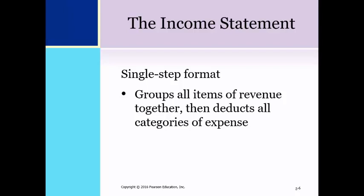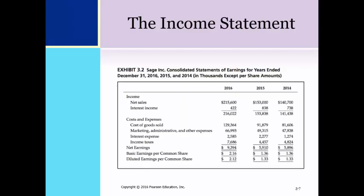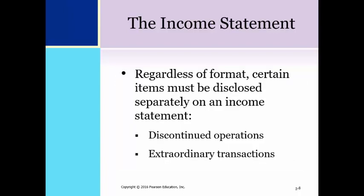The single step version of the income statement groups all items of revenue together, then deducts all categories of expense to arrive at a figure for net income. This is an illustration of a single step income statement for Sage Inc. for the years ending December 31st, 2016, 2015, and 2014. Note that the intermediate steps shown in the multiple step format are missing in this illustration.